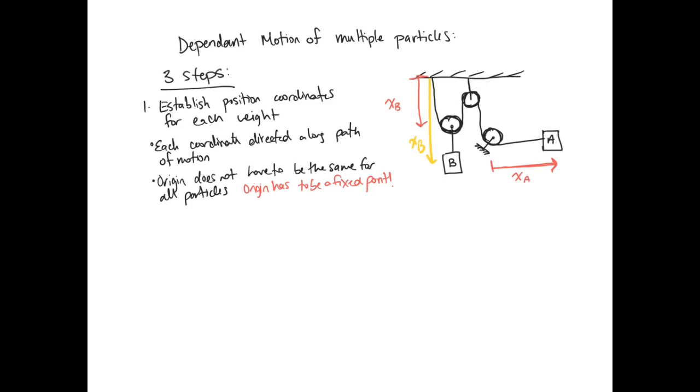Step two is to establish constraining equations. So you have one constraint per rope. And ropes are inextensible. So none of the ropes in this course will stretch at all.